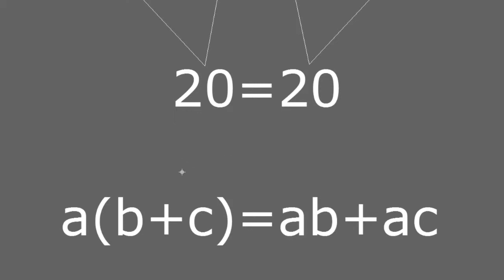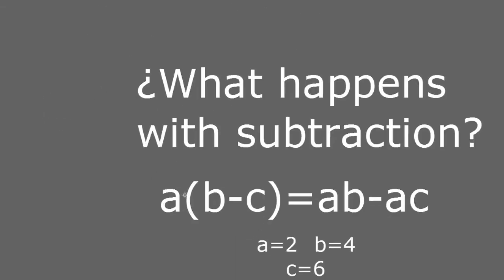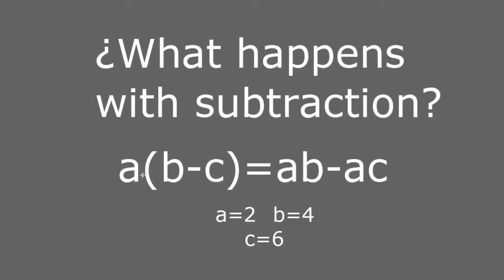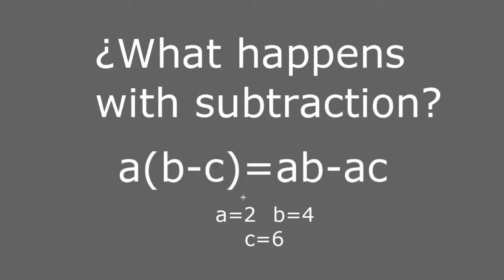The distributive property is correct in this form. Now, what happens if I have subtraction? If I have a multiplied by b minus c, it's very similar — I just subtract on the other side, and it becomes a times b minus a times c. Let's substitute the same values as before and perform the same exercise but now with subtraction, to see if we get the same result from a times b minus c as we get with a times b minus a times c.